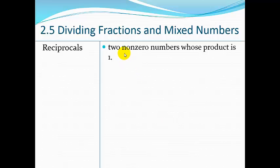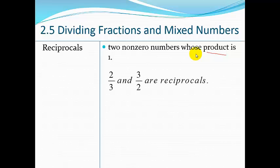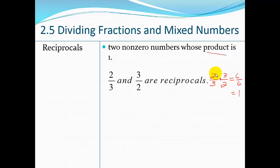Before we go into the actual rules of how to divide, let's talk about reciprocals. You have two non-zero numbers whose product is one. For example, two-thirds and three-halves are reciprocals. If I multiply two-thirds times three-halves: 2 times 3 is 6, 3 times 2 is 6, and 6 divided by 6 is 1. You can also use cross-cancellation: 2 divided by 2 is 1, and 3 divided by 3 is 1.